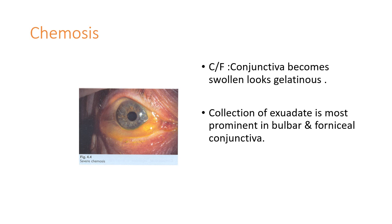Clinical features: the conjunctiva becomes swollen and looks gelatinous. The collection of exudate is most prominent in the bulbar and fornical conjunctiva. Because the conjunctiva is attached to the limbal margin — about two to three millimeters around the limbus — the edema will not cross the limbal margin.